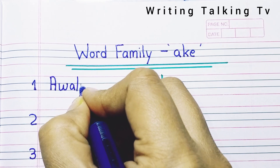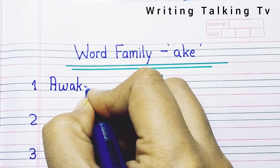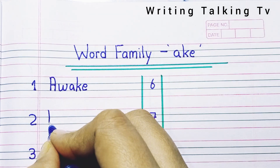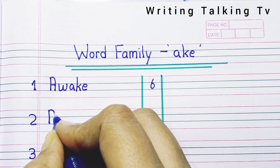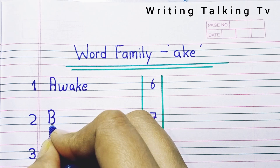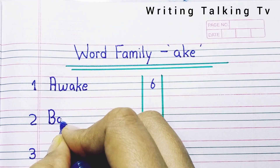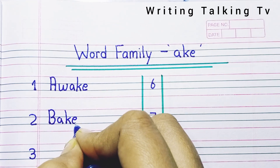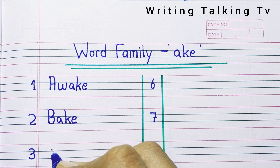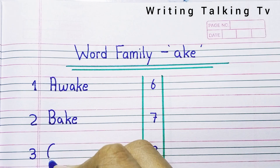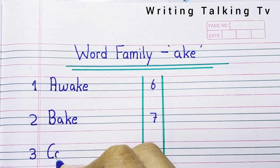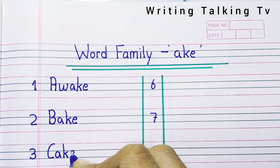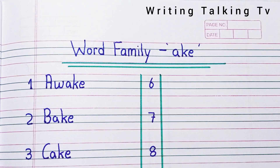First number A-W-A-K-E, Awake. Second number B-A-K-E, Bake. Third number C-A-K-E, Cake.